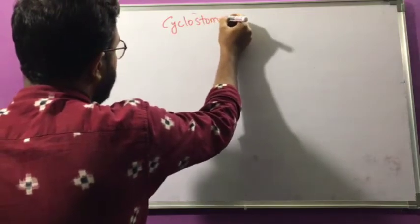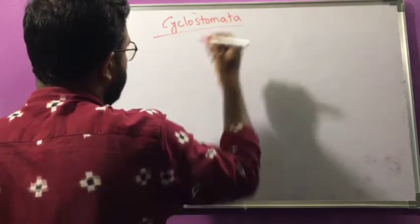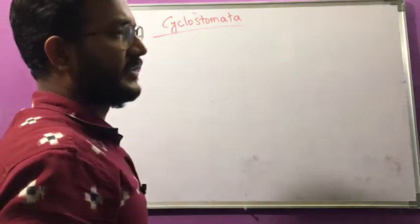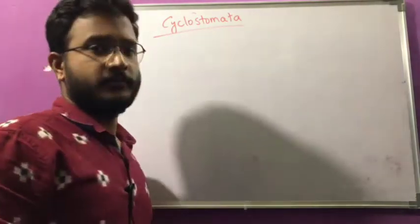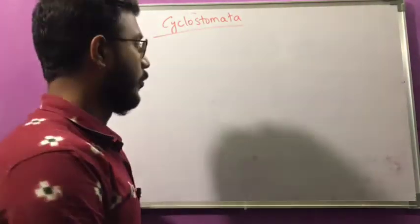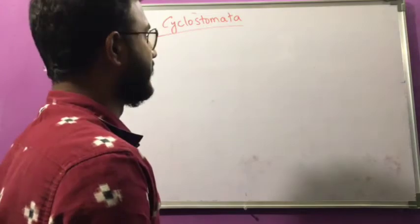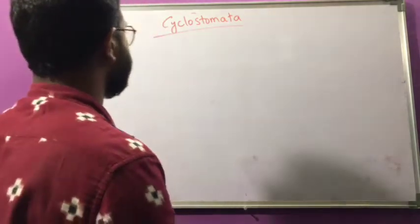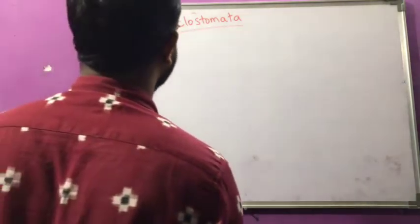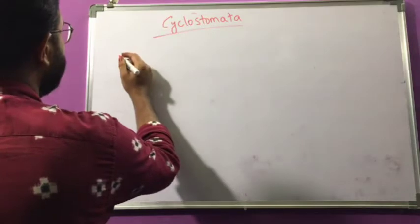After this we will see the classification of fishes and the different classes present in them. Fishes do not have limbs; they have fins. We will see some characters and examples of the class Cyclostomata.